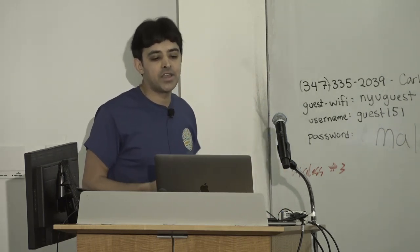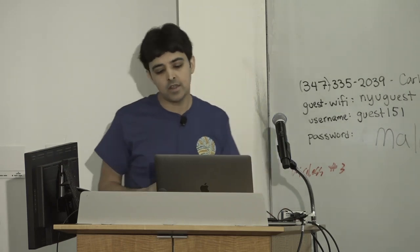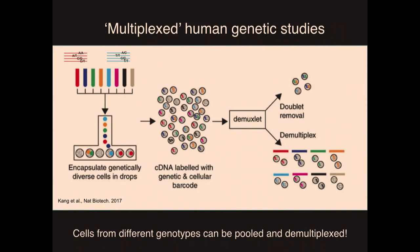Now I'll transition to another reason why you might want to sequence millions of cells: understanding human genetic variation. If you want to sequence hundreds or even thousands of different people with different genotypes, you'll need to sequence a lot of cells. Jimmy had a fantastic idea: you can pool cells from different people together and use single nucleotide variants or polymorphisms as an inline barcode to say which cell belonged to which individual person. His approach and software — which he named Demuxlet — has been very widely used for working with human genetic samples.